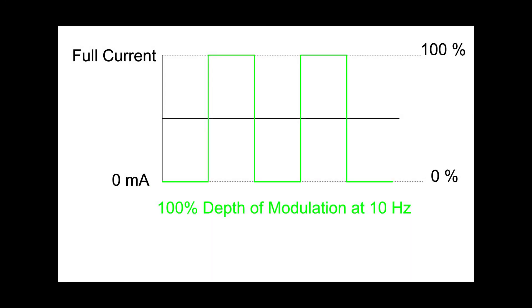Depth of modulation is specified in percentage. 100% depth of modulation means the maximum peak-to-peak signal allowed in the analog modulation input is repeated on the output current without distortion.